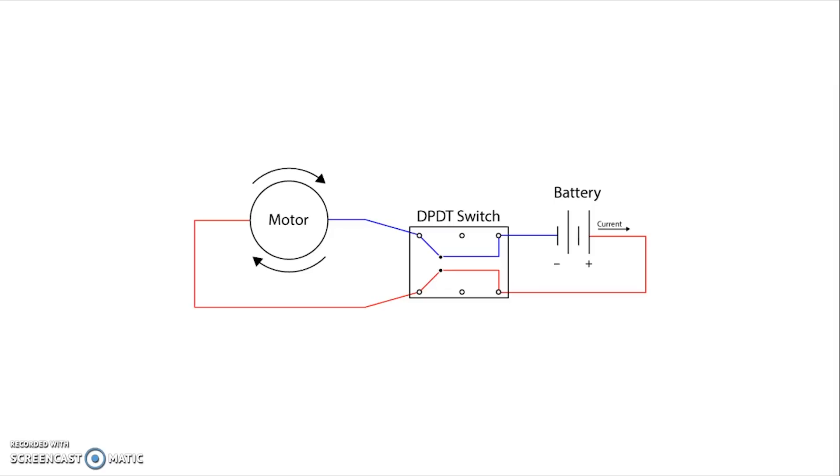So let's go ahead and take a look at a double pole double throw switch and how we can use it to reverse polarity. You can see in this diagram that the current is coming out of the positive side of the battery and through this double pole double throw switch through the motor and back through, you have complete circuit. If we wanted to reverse the direction of the motor we would need to change which terminal in the motor is receiving positive and which is receiving negative, assuming that it's a DC motor, a brushed DC motor.